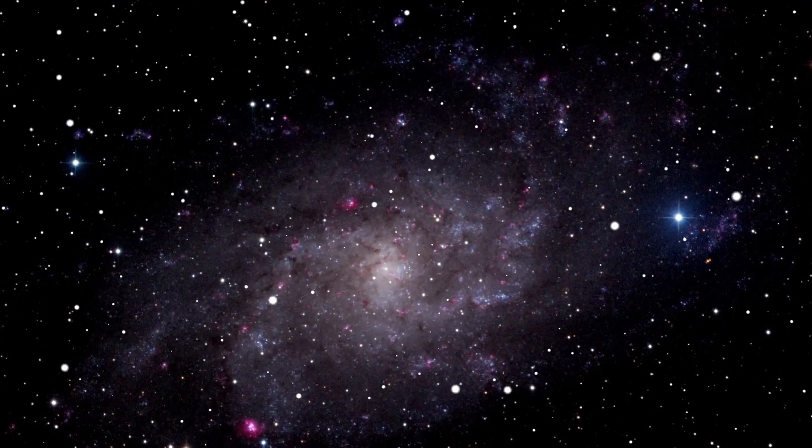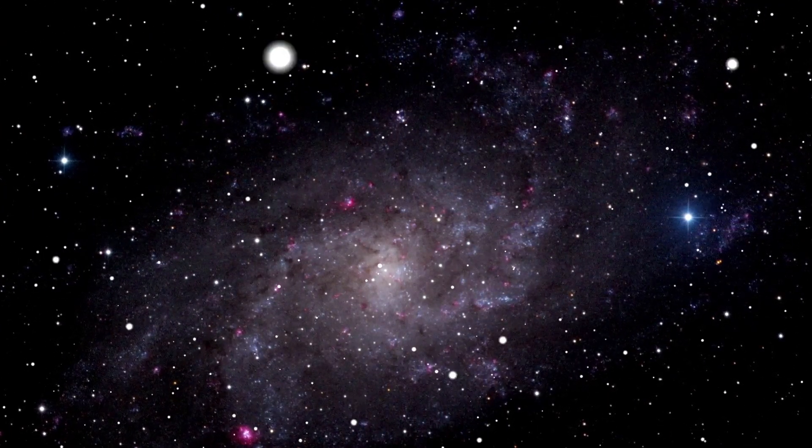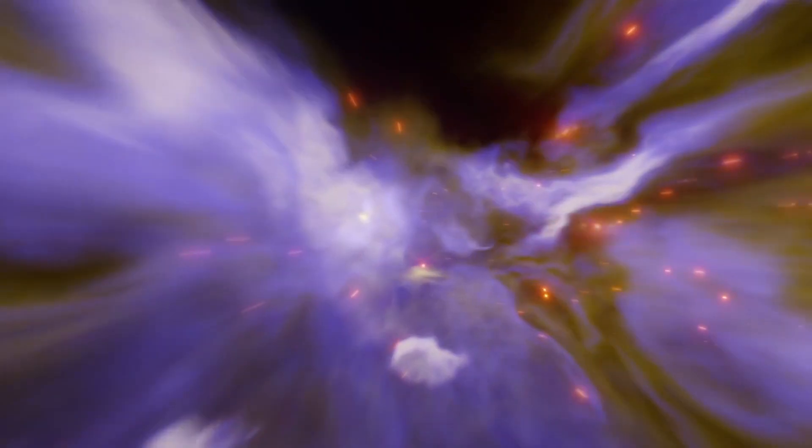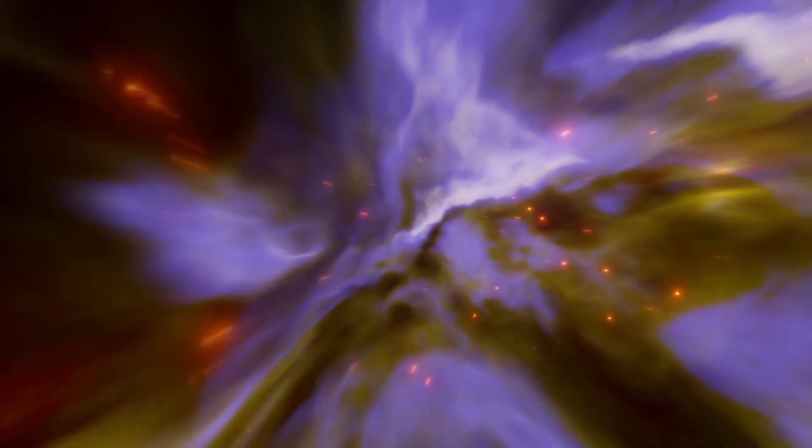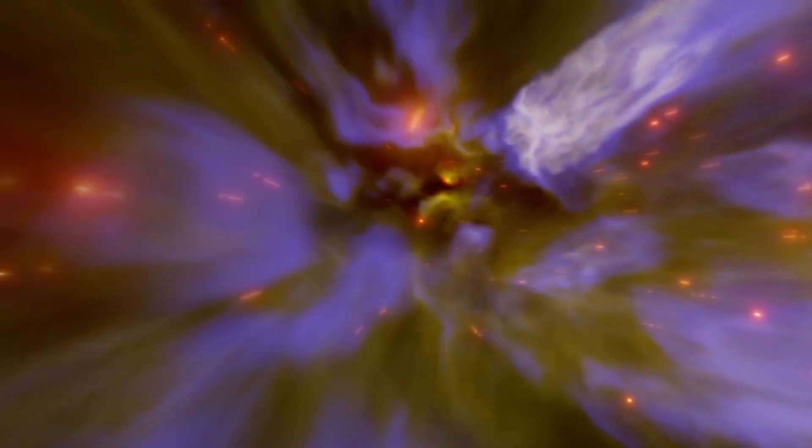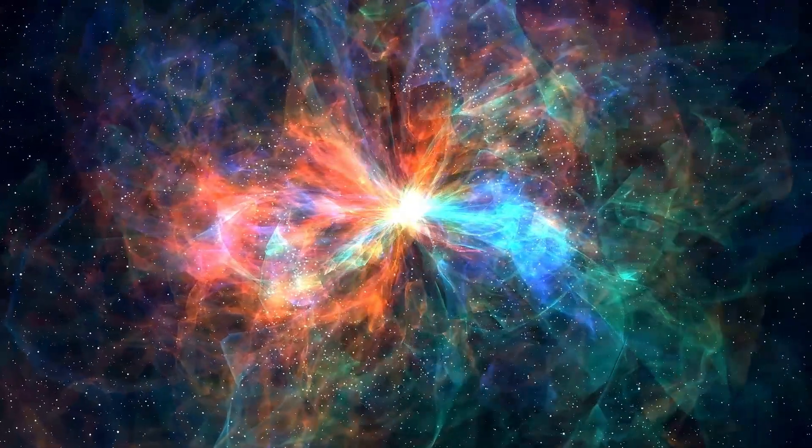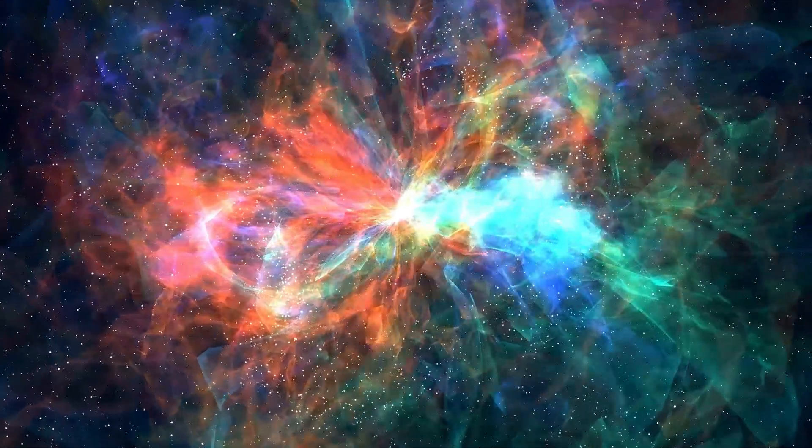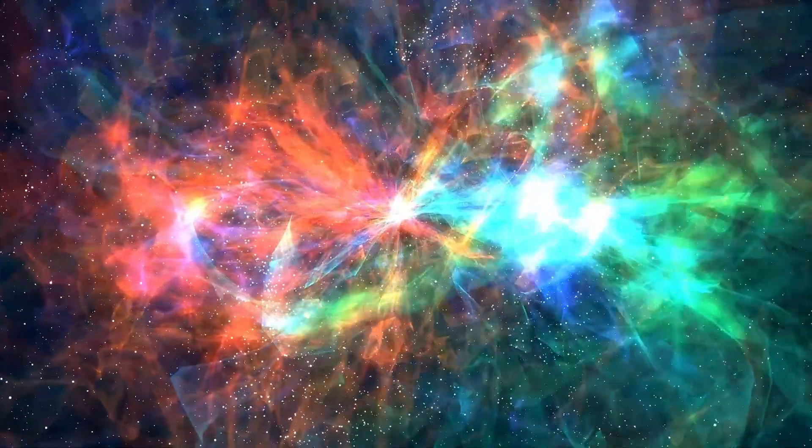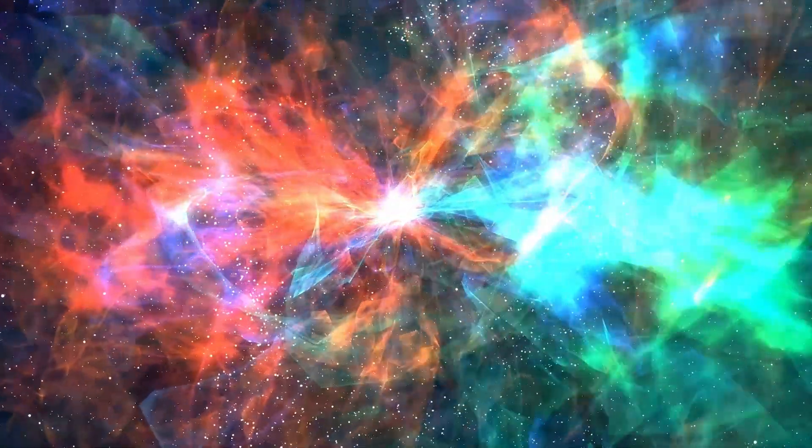Betelgeuse is a conspicuous star in the constellation Orion, easily recognizable in the night sky due to its distinctive shape and brilliant color. Also referred to as Alpha Orionis, it holds the title of the most brilliant and largest star in this celestial region. Recent information gathered by NASA's Hubble Space Telescope,